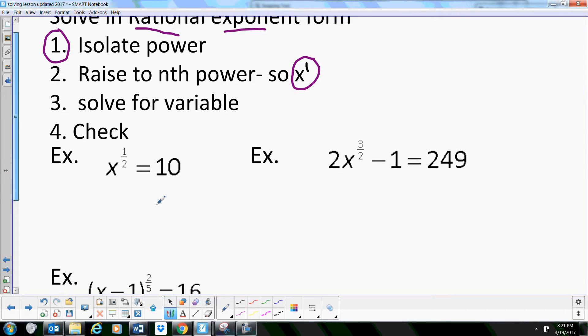So let's look at the first one. We've got x to the one-half power, and we know one-half is really just the square root written as a rational. We want x to be to the first power, so we need to raise it to the reciprocal of one-half, which is two over one, or just squared. So we're going to square the 10, and we get x to the first, because when we multiply a half times two, we're just getting one, is equal to 100.